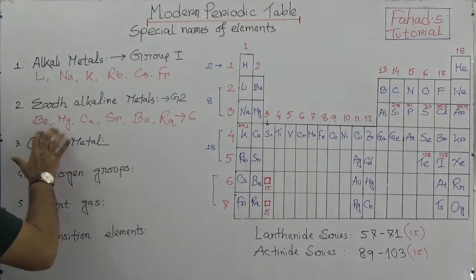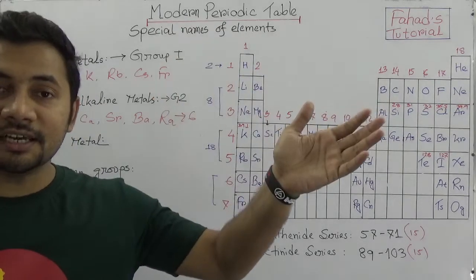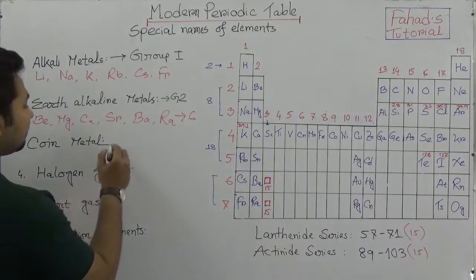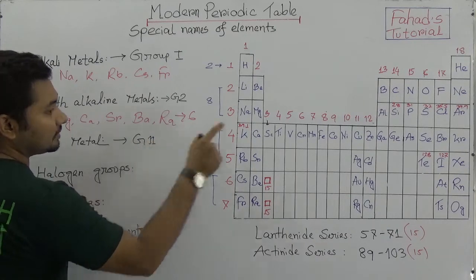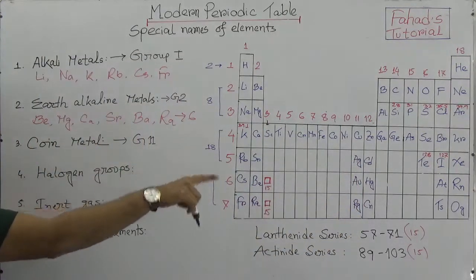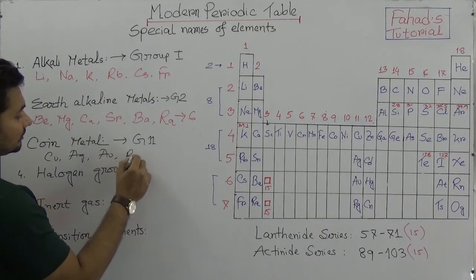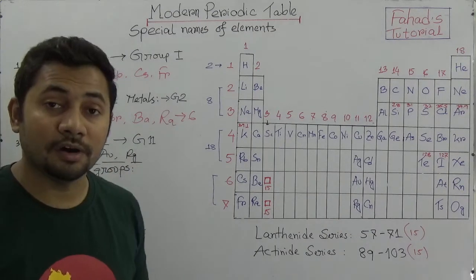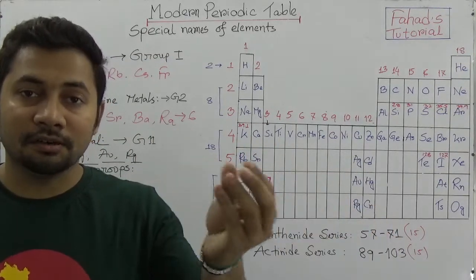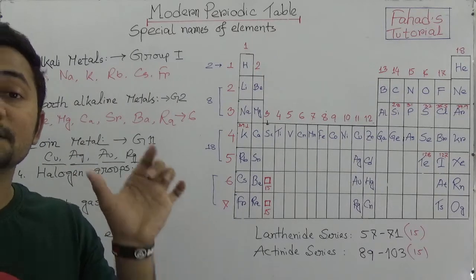Now you must know about coin metals. In ancient times these were used in trading and commerce, and these coins are made from group number eleven elements. In group number eleven there are four metals: copper, silver, gold, and roentgenium. These elements like copper, silver, gold, and roentgenium are used in the production of coins. Coins are still used in trading, business, and commerce, and since coins are made from these metals, this group is known as coin metals.